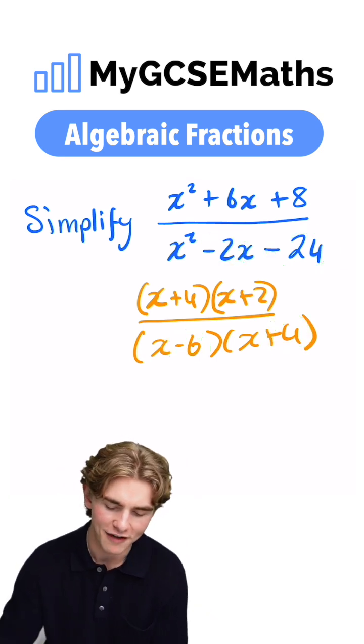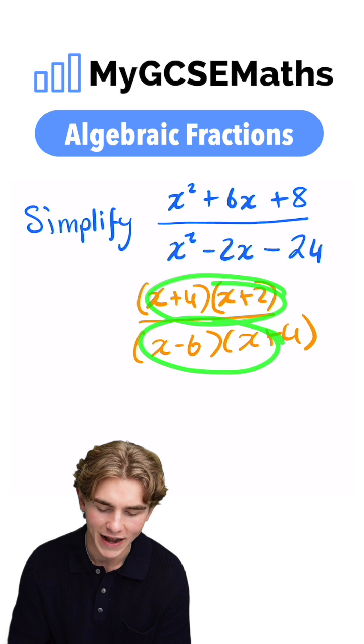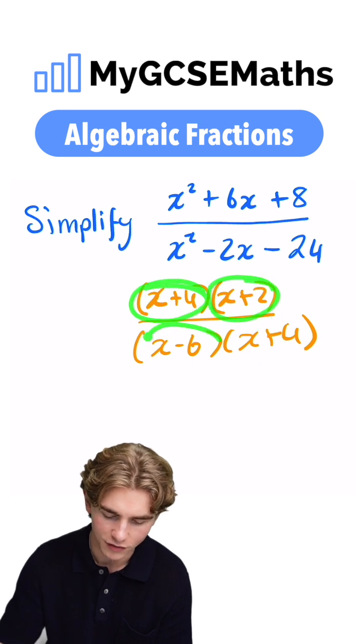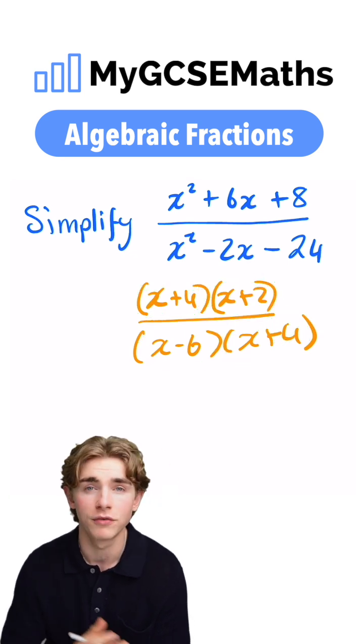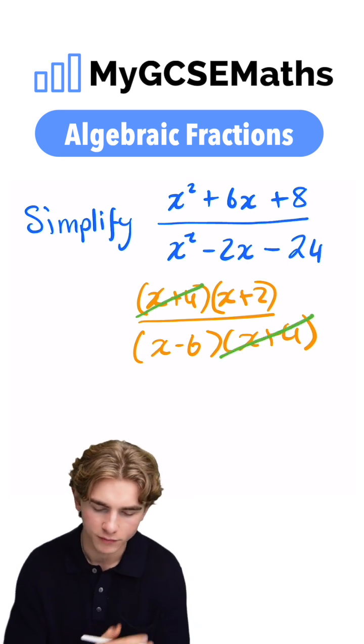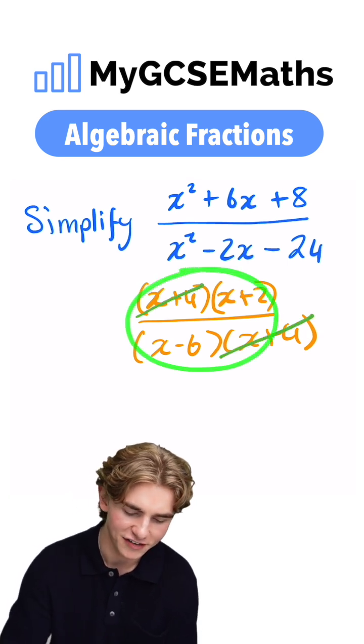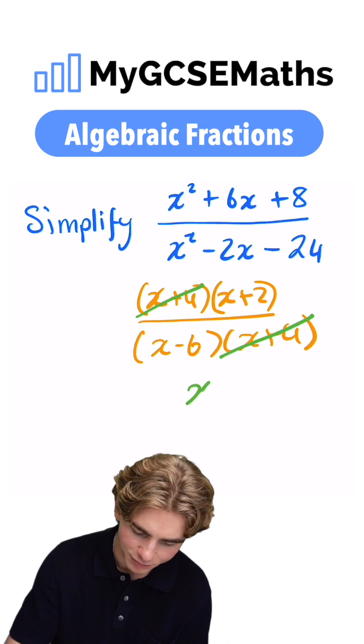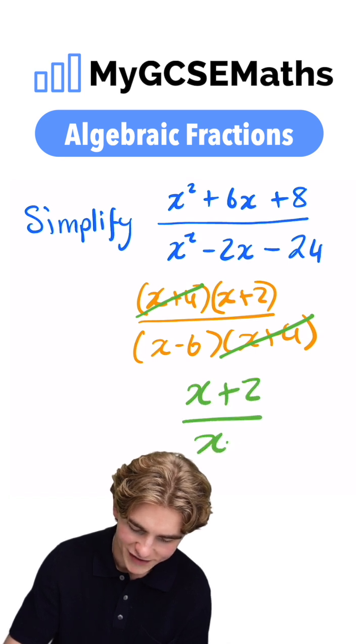Now, what can we do? Now that we have the top and the bottom both written as the product of a couple of different numbers, we can divide the top and bottom by any common factors. Here we have an x plus 4 on the top and an x plus 4 also on the bottom, so we can divide top and bottom by x plus 4. We're going to be left with x plus 2 on the top and x minus 6 on the bottom.